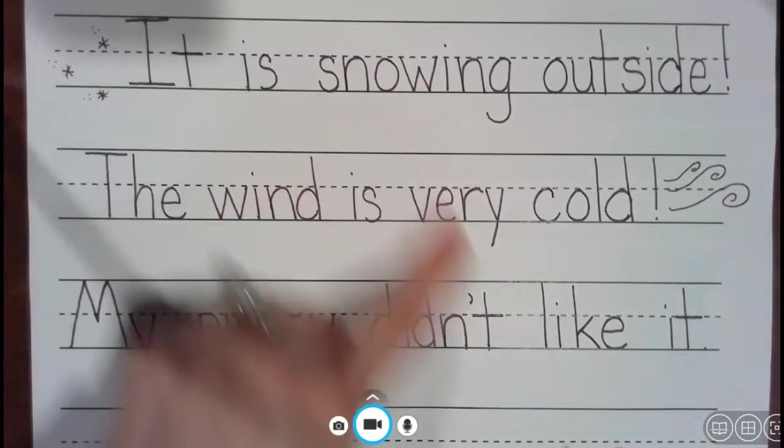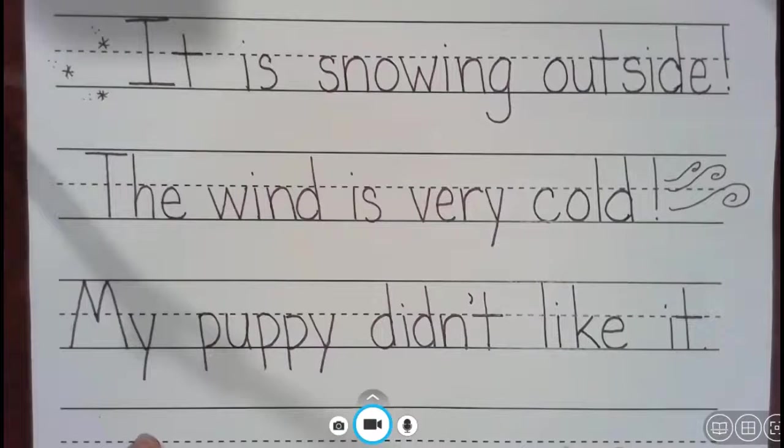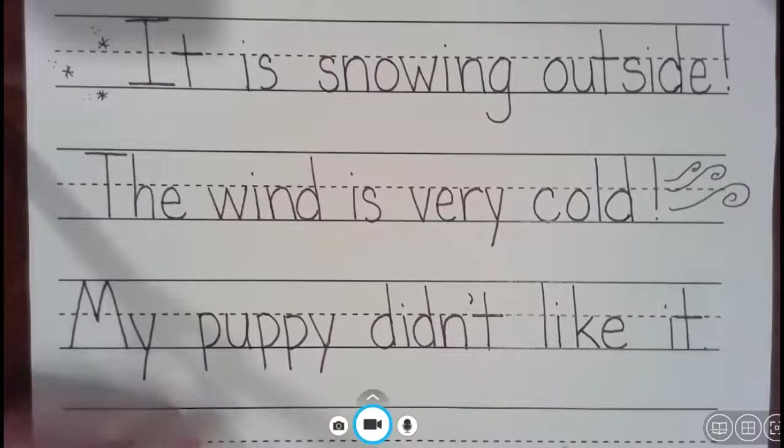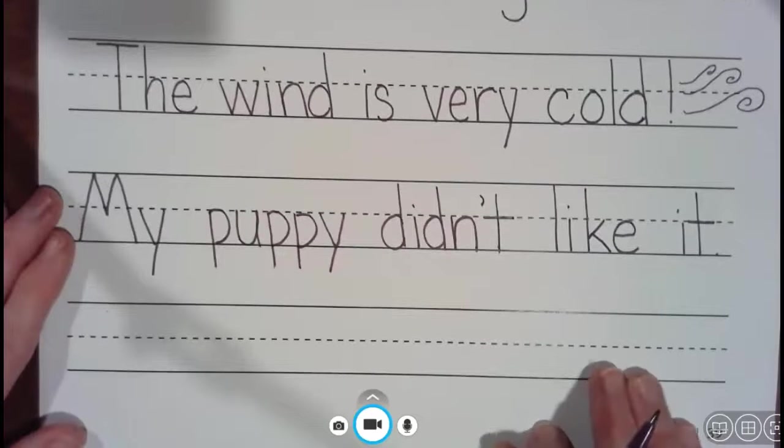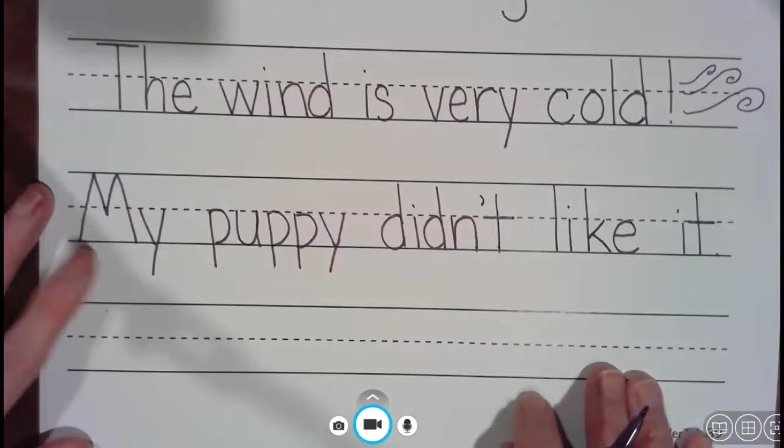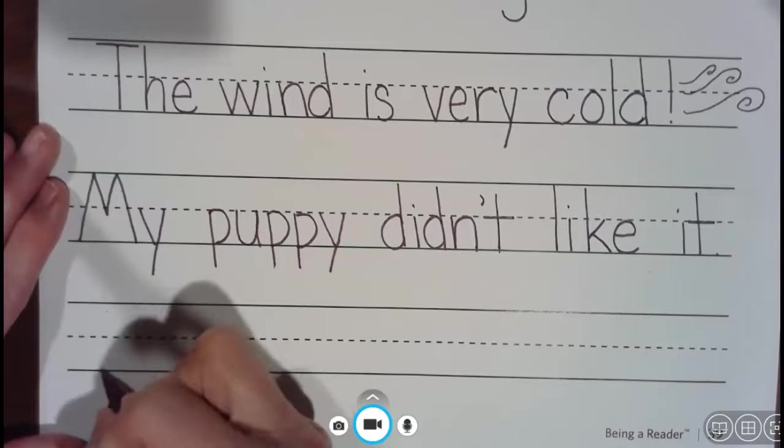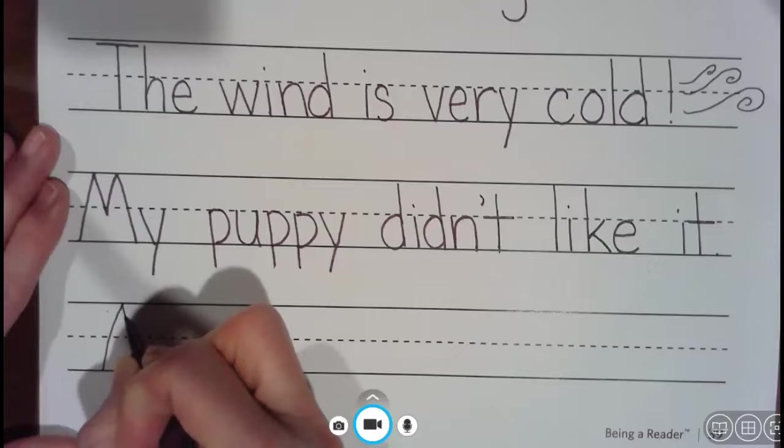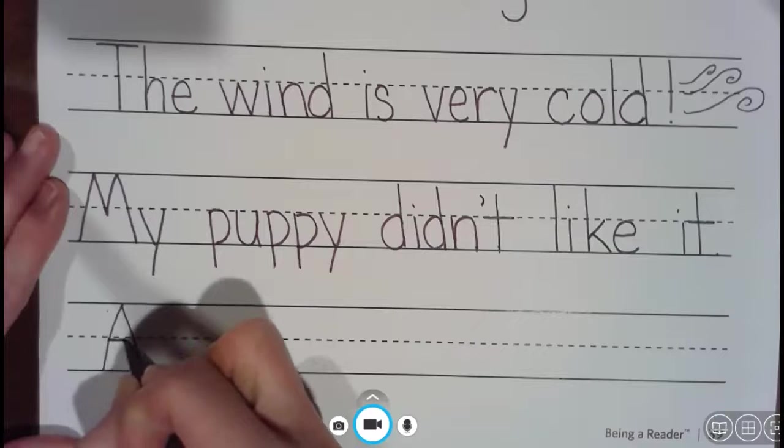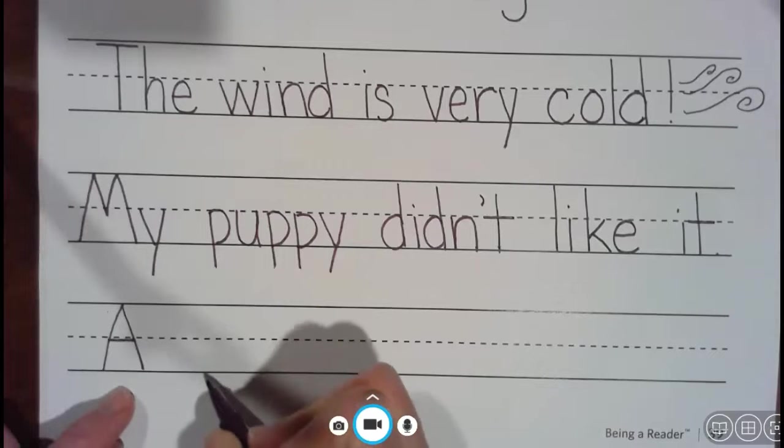So we have practiced a lot of letters. One letter we haven't practiced is the letter A. No A's in here, are there? No B's, no K. Oh yeah, we got a K right there. Let's see if I can think of a sentence that has an A and a Z. A capital A, because that's going to start our last sentence.